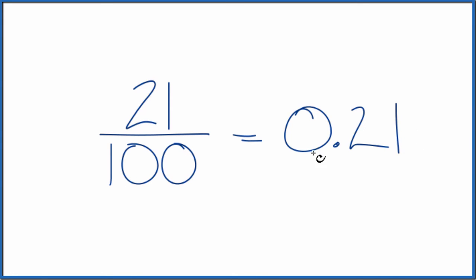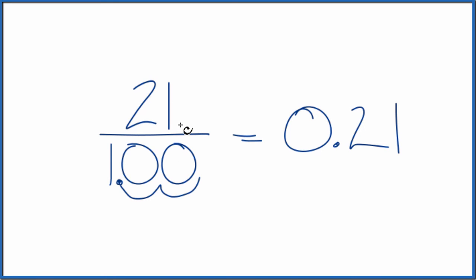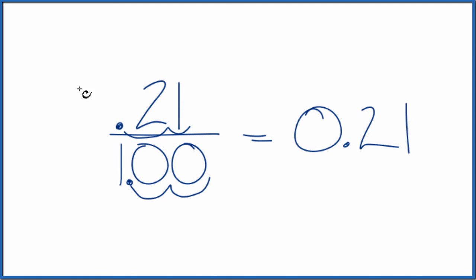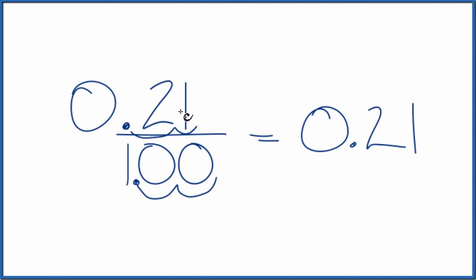The other way to do this is to recognize that you have 100 in the denominator, and we can move the decimal point one, two places. That gives us one. We have to do that in the numerator as well. So let's do that — one, two places — and now we have 0.21 over one, and that just equals 0.21.